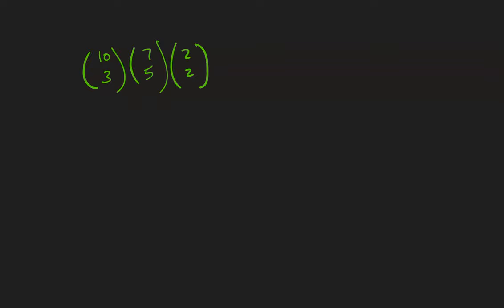both go on the third project. This is (10!/(3!·7!)) × (7!/(5!·2!)) × (2!/(2!·0!)).